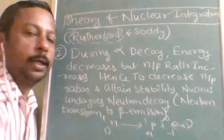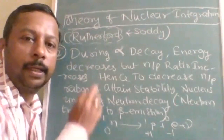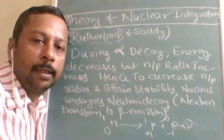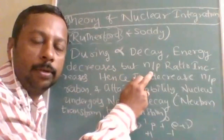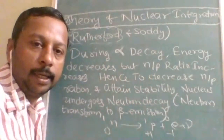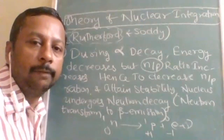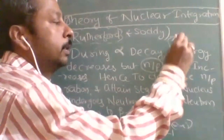The first point is clear: an atom in excited state means low binding energy and high energy levels. To attain lower energy or increased stability, it loses an alpha particle which acts as an energy carrier. During alpha decay, energy decreases but N/P ratio increases — this was clearly explained with an example in the second lecture, which covered the N/P ratio and how it is used for stability.